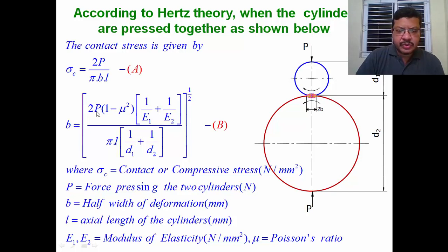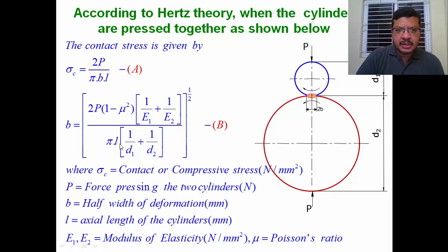b, half of the deformation, equals 2·P·(1 − μ²) multiplied by (1/E1 + 1/E2), where μ is Poisson's ratio, E1 and E2 are the moduli of elasticity of the two cylinders, d1 and d2 are the diameters, and l is the length of the axis of the cylinder.